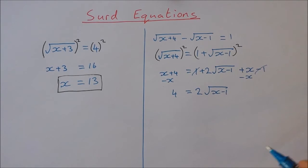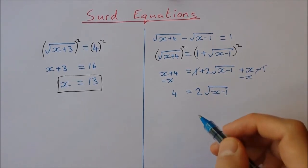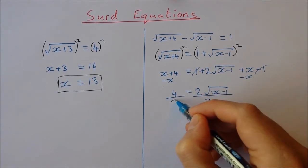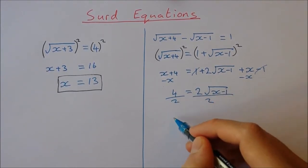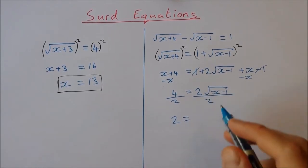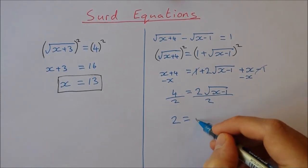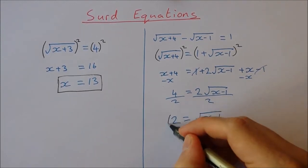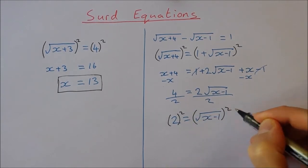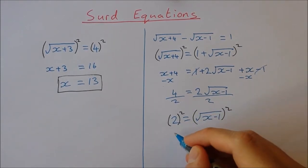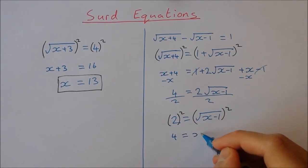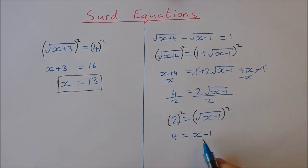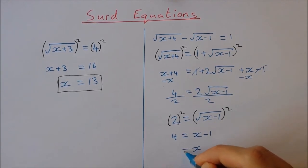There are two approaches we can take. I'll show the first: dividing both sides by 2 gives 2 equals the square root of x minus 1. Now I can square both sides — 2 squared is 4, equal to x minus 1 — and adding 1 to both sides gives x equal to 5.